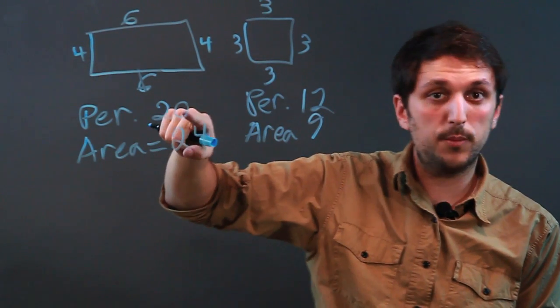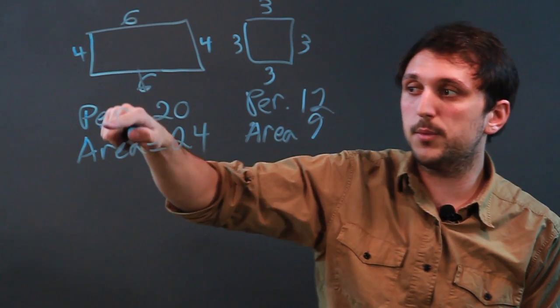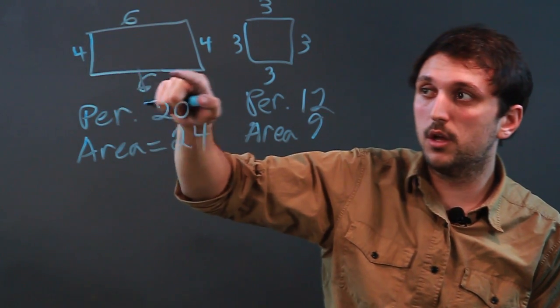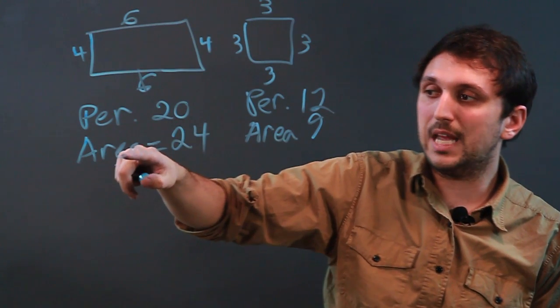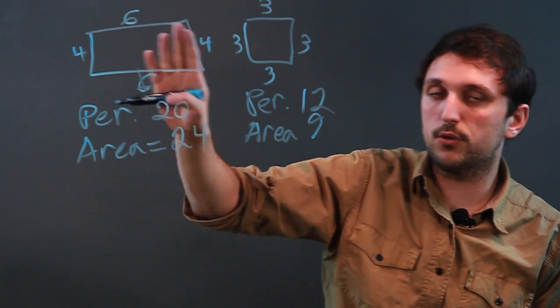So sometimes perimeter is smaller than area, other times perimeter is bigger. The other thing, though, is that the perimeter is a one-dimensional length going around, whereas the area is square units, because we're actually covering a full surface.